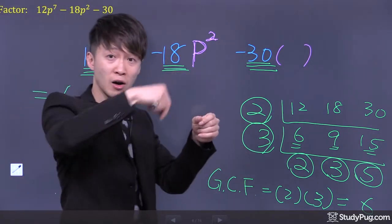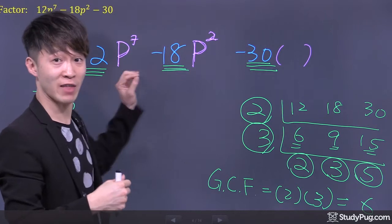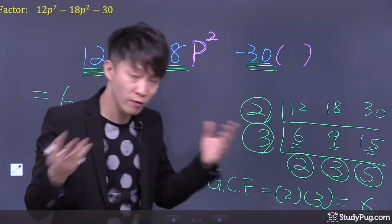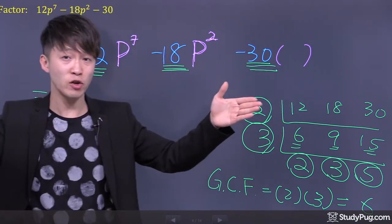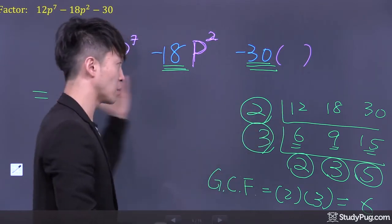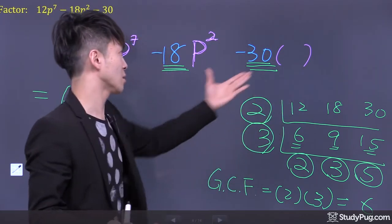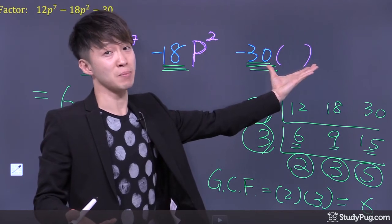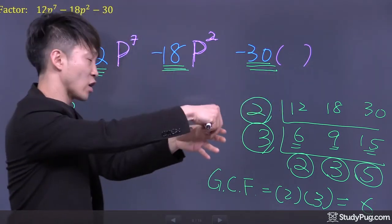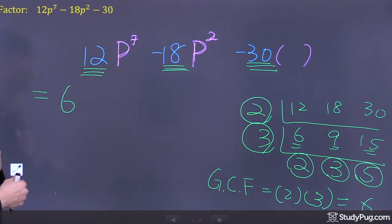Because in order to take something out, everybody must have that thing. So if we ever want to take out p, then every term in the polynomial must have p. But in this case, the last term here is missing the p. We cannot take out the p.